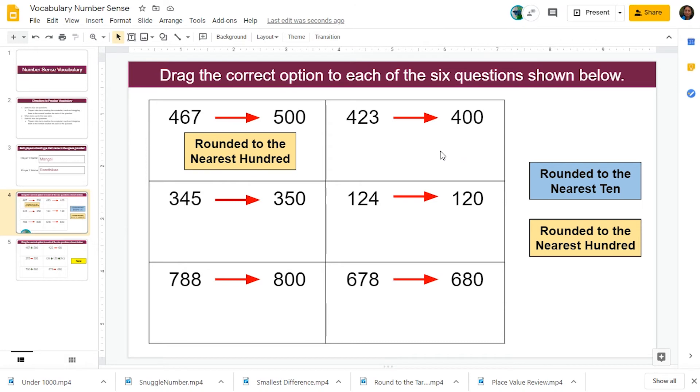Now it is my partner's turn. She is looking to see how the four twenty-three rounded to four hundred.